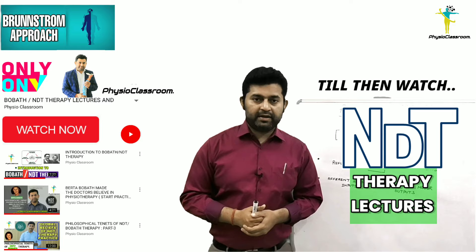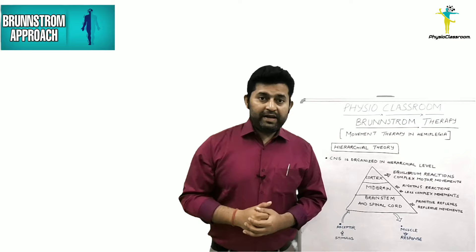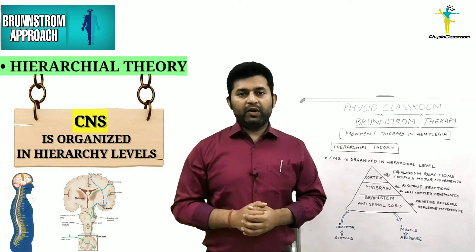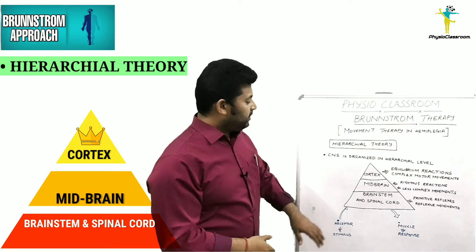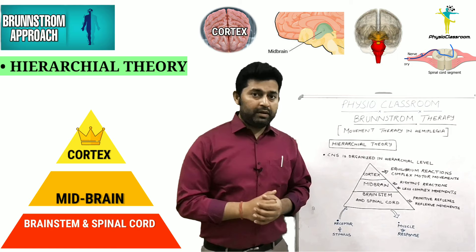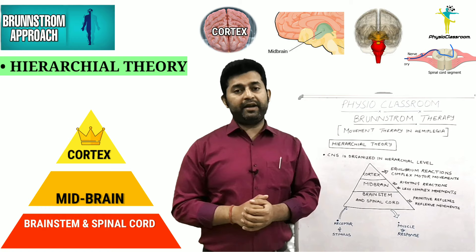This will become clearer when we discuss and practically demonstrate Brunnstrom therapy techniques in upcoming videos. Now let's briefly discuss the hierarchical theory of motor control. This theory states that the central nervous system is organized in hierarchical levels to control the motor functions of the body. Students can appreciate the motor control hierarchy: we have the cortex on top, followed by the midbrain, then the brainstem, and the spinal cord.